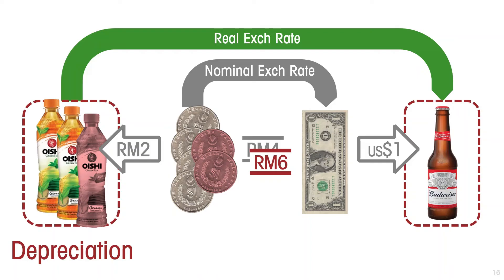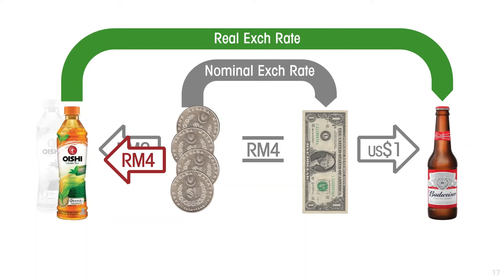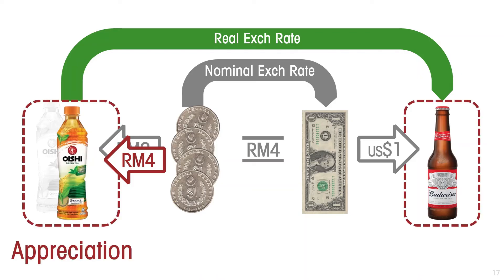One more exercise: the effect on the real exchange rate of local inflation in Malaysia. If prices in Malaysia were to double, and the nominal exchange rate doesn't change and US prices are stable, then to get the beer we still need a dollar; to get the dollar we still need 4 ringgits. But to get 4 ringgits, we now need to produce and sell only one bottle of tea. So Malaysian products have appreciated in value — it used to be two bottles of tea equivalent to one bottle of American beer; now one bottle of tea equals one beer.